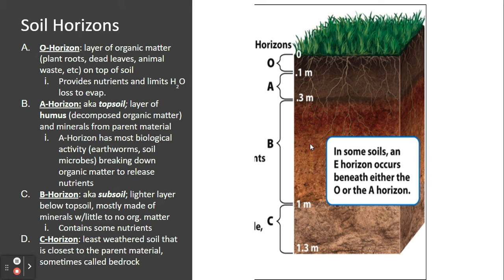Below that is the B horizon, where we see subsoil — the lighter layer below the topsoil made of minerals, and not very much organic matter is found here. Then we have the C horizon, which is going to be the least weathered part of the soil, closest to the parent material — may even be called the bedrock. It's important to note that in some biomes, soil horizons can have an additional layer called the E horizon, which can occur either beneath the O or the A. We call it the E horizon because it's the eluviation layer, and in eluviation we tend to see lots of leaching of nutrients like sodium, potassium, nitrogen, and so on.